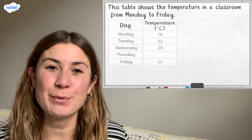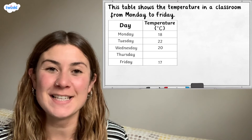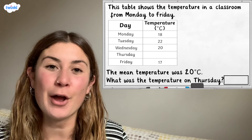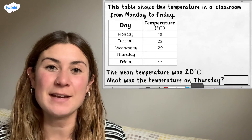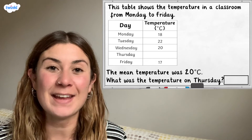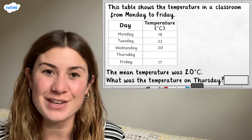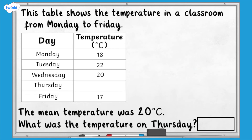Now it's time for a challenge. This table shows the temperature in a classroom from Monday to Friday. We've been told that the mean temperature over the week was 20 degrees Celsius. Can you use this information and the information in the table to work out what the temperature was on Thursday? Pause here and have a go. Unpause if you get stuck or when you're ready to check your answer.